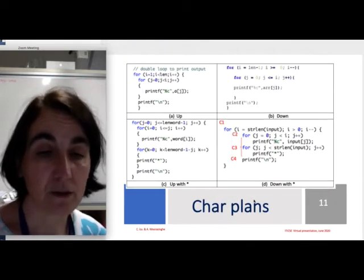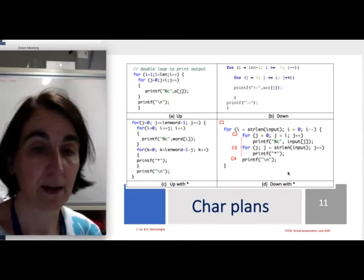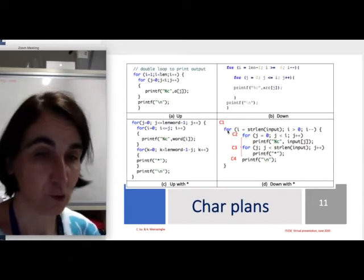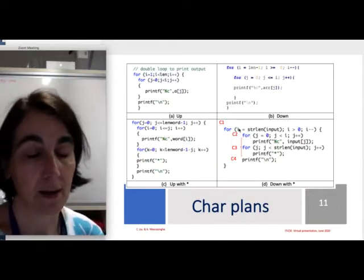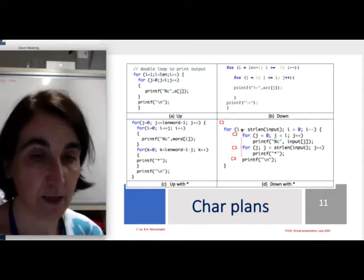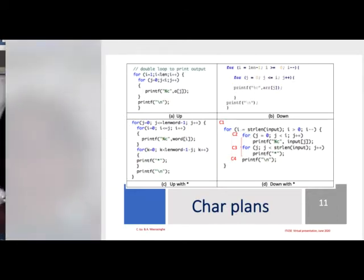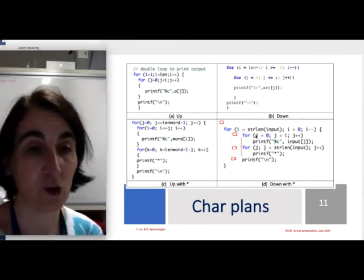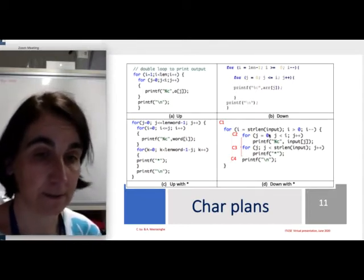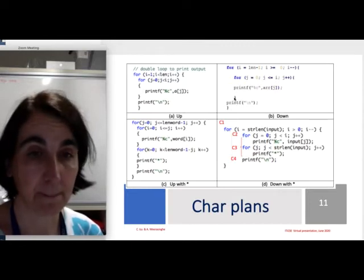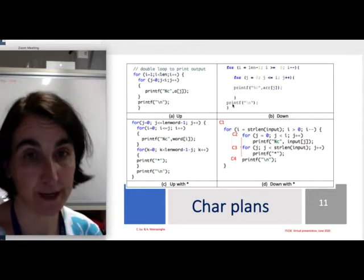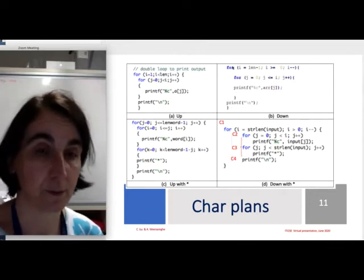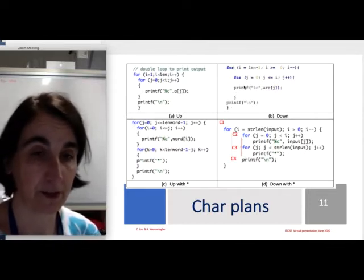The second type of plan, character plan, it has two nested for loops. The first loop prints one line. The second loop decides how many letters we're going to print on that given line. And then after we finish printing the letters, we need a new line before we start with the next iteration.